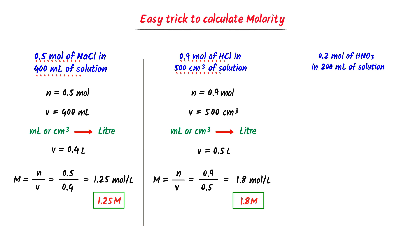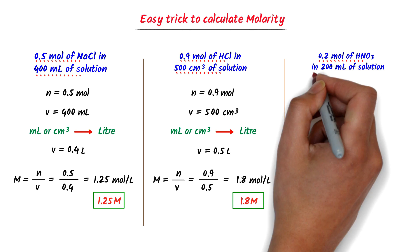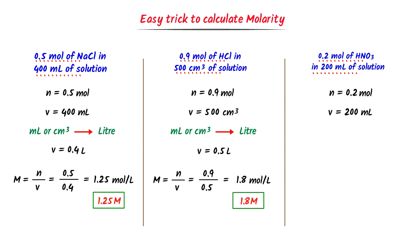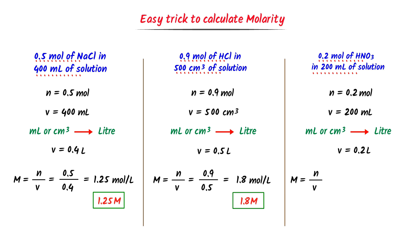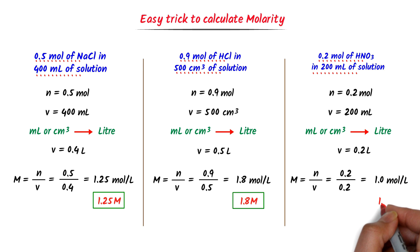The molarity of this solution is 1.8 M. Now in this question, 0.2 mol of HNO₃ is dissolved, so the number of moles of a solute is 0.2 mol. The volume of a solution is 200 ml. I move the decimal point 3 times to the left and get 0.2 litre. We know that the formula of molarity is M equals N upon V. Here N is 0.2 mol and V is 0.2 litre. After calculation, I get 1 mol per litre, or just 1 M. Thus, the molarity of this solution is 1 M.